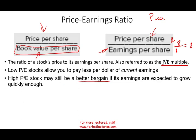High PE stock may still be a better bargain if earnings are expected to grow quickly enough. For example, growing companies like Tesla and Netflix have a high multiple. If a company is making a dollar per share and the price is $60, you are paying 60 times. But if you expect earnings to go from $1 to $5, then at $5 the multiple is now only 12 — you paid 60 times today because you were buying the future. That's the key: when you buy a stock, you are buying the future earnings.